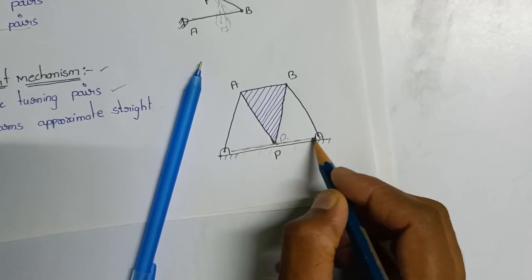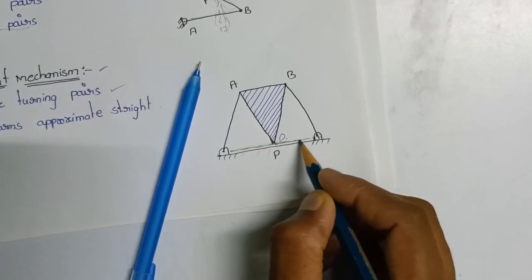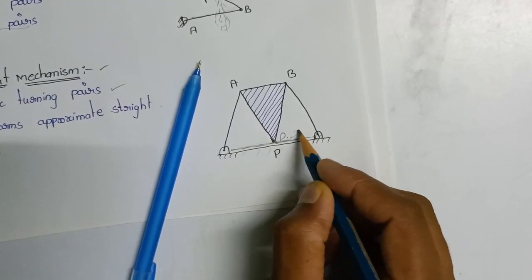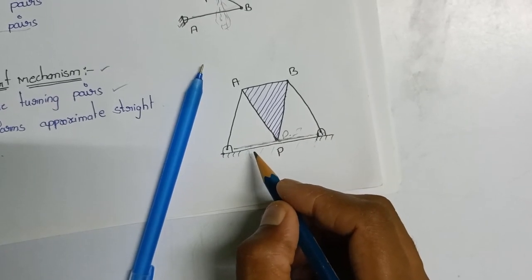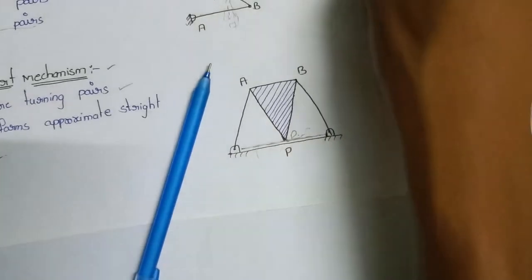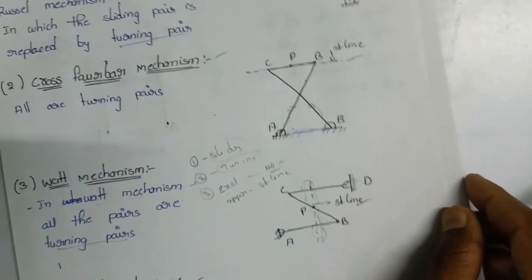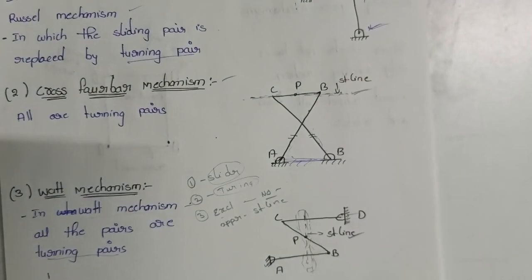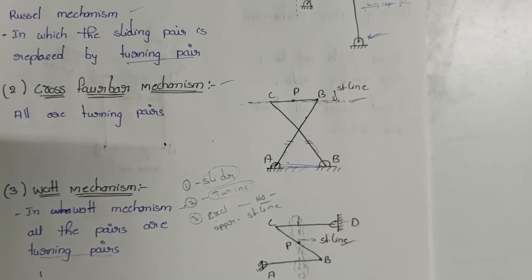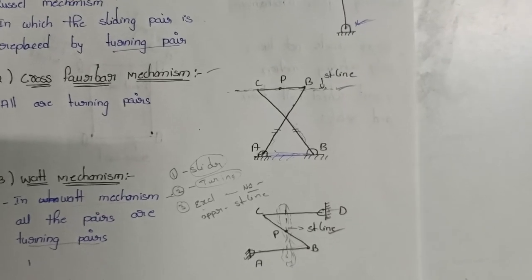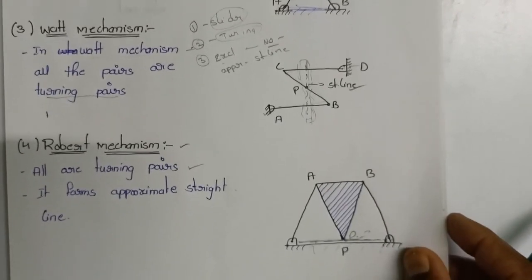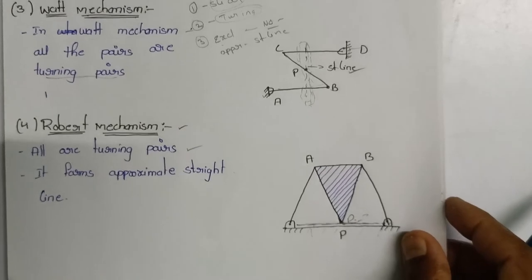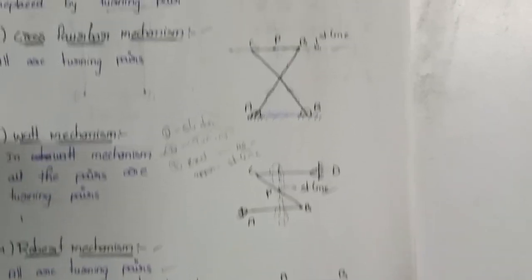This is the straight line — the exact straight line is the exact form. The approximate line is the approximate straight line motion mechanism. The approximate straight line motion mechanism has four types: grasshopper mechanism, grass 4-bar mechanism, Watt mechanism, and Roberts mechanism.